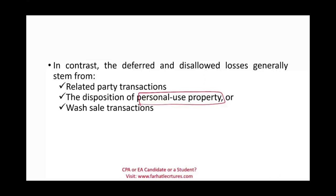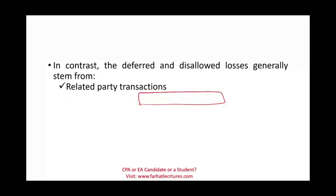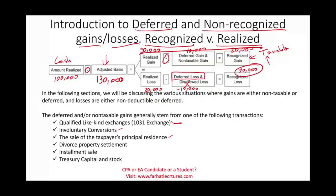Every time there's a list, we're going to go over it in detail step-by-step, starting with qualified like-kind exchanges. What should you do now? Go to Farhat Lectures — whether you are a CPA candidate, an enrolled agent candidate, or a student — start working multiple choice questions and true-false. That's going to help you understand the concept better. Make sure you know the difference between recognized gain, recognized loss, realized gain, and realized loss. Good luck and stay safe.